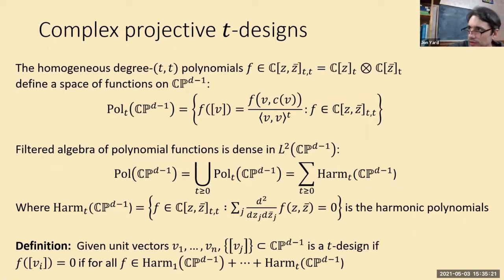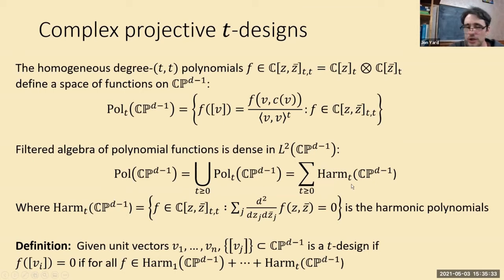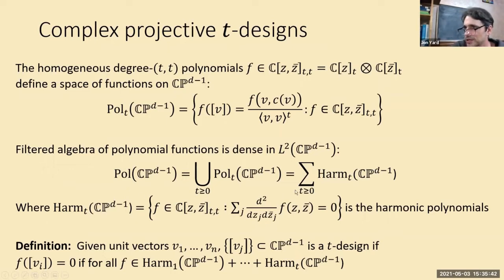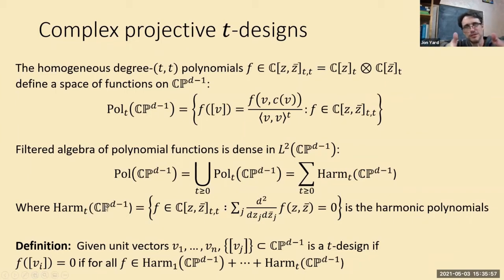We take polynomial functions for this discussion. This space can be decomposed into a direct sum of subspaces of harmonic polynomial functions — you take pol_T and everything in the kernel of the Laplacian operator, taking derivatives with respect to the Z's and Z-bars. In each pol space there's a highest degree space, and as you increase T you get a new space of functions, and so on to infinity.